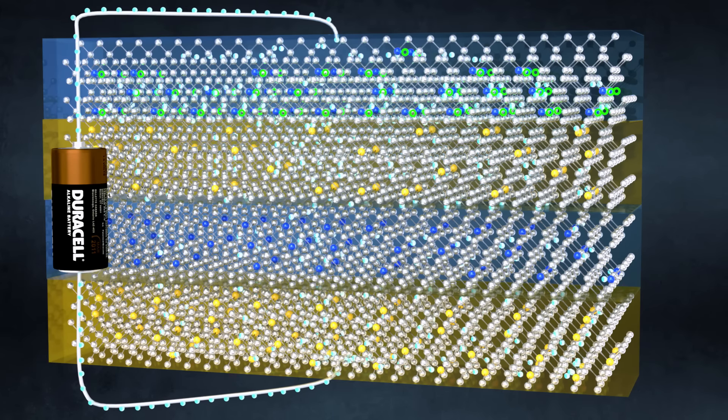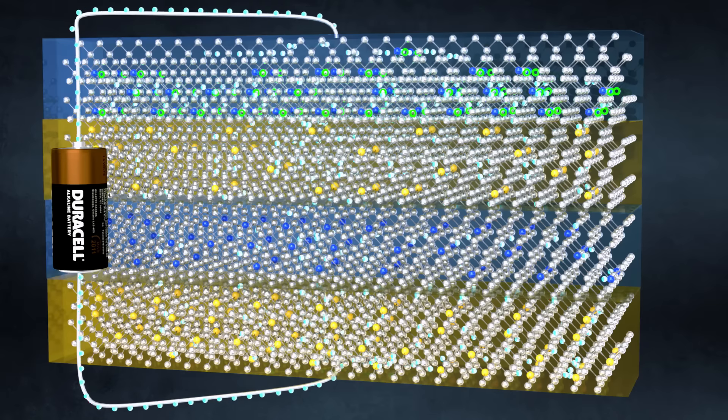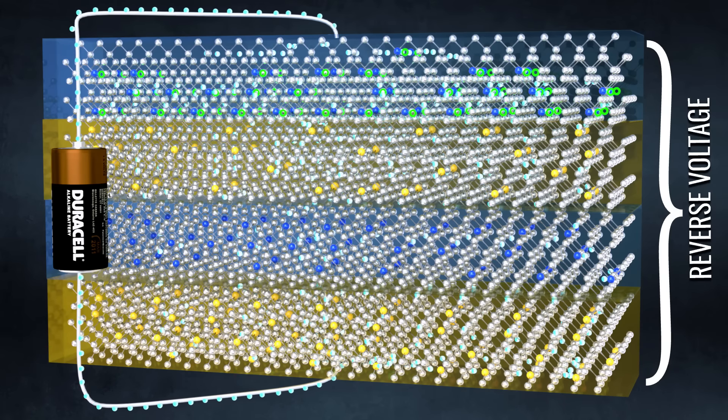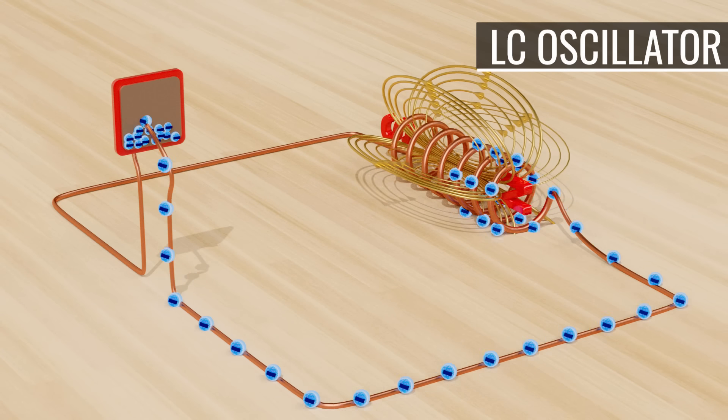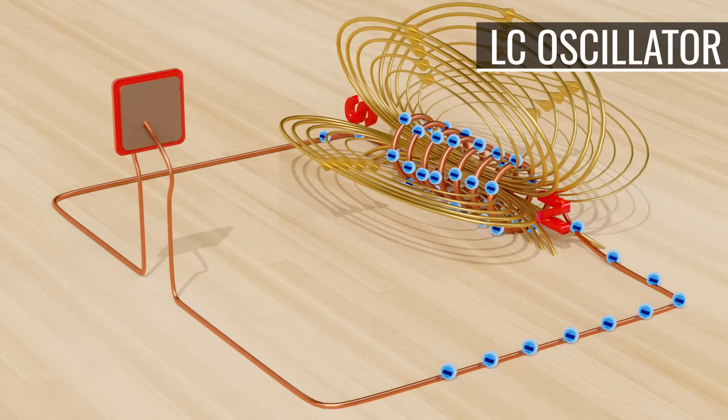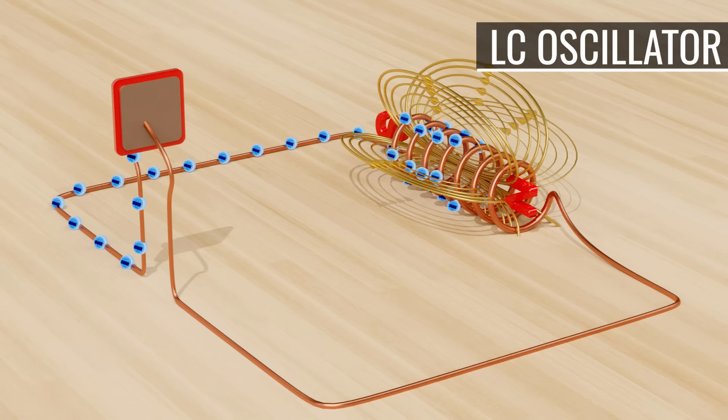The only way to turn off a thyristor is by applying a reverse voltage across it. The most efficient way to achieve this is by the use of an LC oscillator. In an LC oscillator, an energy exchange happens between a capacitor and an inductor.